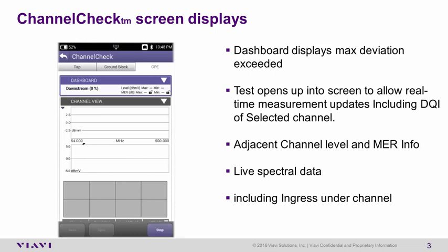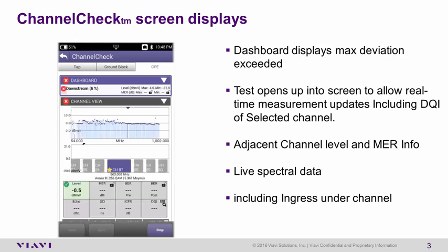Now we have our new work order number and the view results screen disappears. I will simply hit the start button to start the application. Very quickly it initializes the measurement engine. Now it's going to search through the spectrum to identify the physical layer of all the different channels, and we see the dots there indicating it's already found the channel plan. As these dots disappear it's making the physical layer measurements across all those individual channels. We can see that one of the channels is displayed in red — that should be channel 95. Right now we're looking at channel 87, which was the previous channel viewed in OneCheck mode.